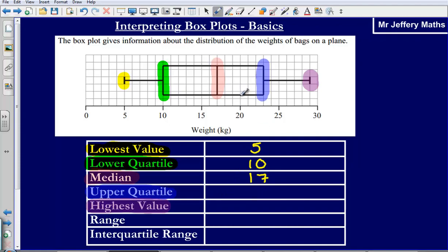Our upper quartile, that's going to be 23. And our highest value is going to be 29.